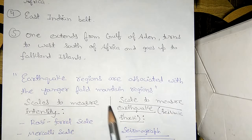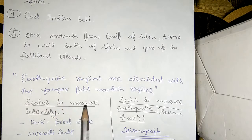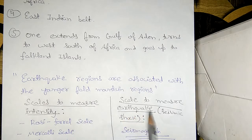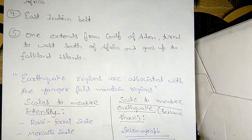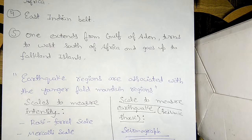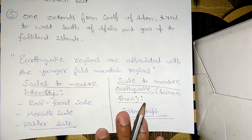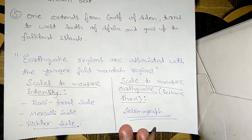An important point: earthquake regions are associated with younger fold mountain regions. This means the places where younger fold mountains are found are associated with earthquake regions. Most mountains we see today are younger fold mountains, so earthquakes predominantly occur in those places.